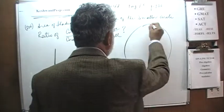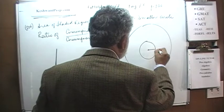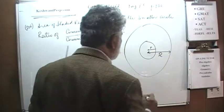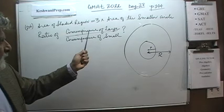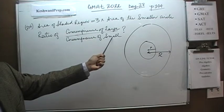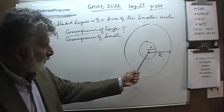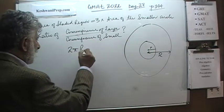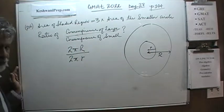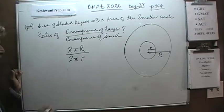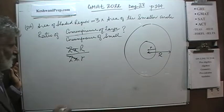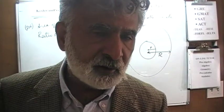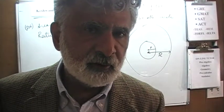Here's our large circle, and here's the small circle. Let's call the radius of the small circle small r, and we're going to call the radius of the large circle big R. We're looking for the ratio of the circumference of the large circle to the small circle. The circumference of the large circle is 2π·R, and the small circle is 2π·r. As you can see, 2π drops out — essentially what they're asking is for us to figure out the ratio of R to r.